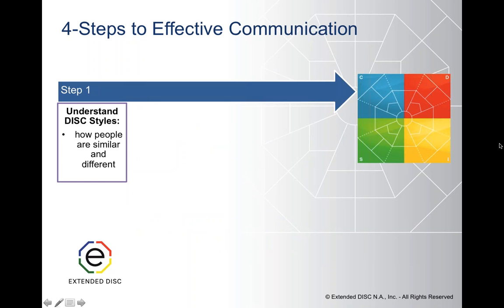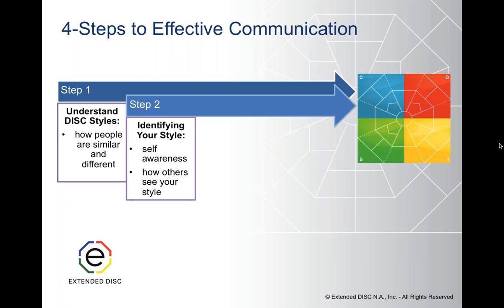What are they? Step one is basically what is D, I, S, and C — understanding the DISC styles, how we're similar and how we are different. Step two is identifying your own style, really raising that self-awareness — not just how we prefer to do things, but how do others see our style? It's not always the same.